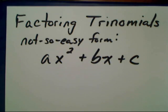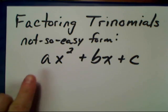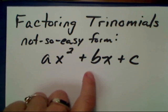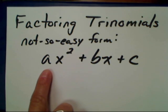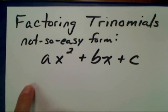Factoring trinomials in not-so-easy form means there's a number in front of your x squared. So we have ax squared plus bx plus c. We can no longer just pick two numbers that multiply to c and add to b, because there's going to be a number in front of your x here in your parentheses, and you have to decide how that's going to manipulate your outside and your inside.